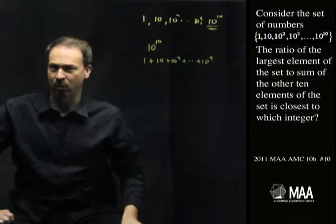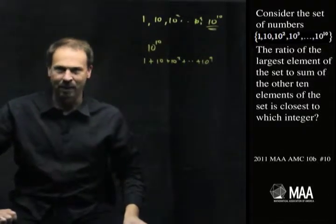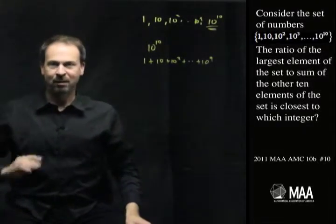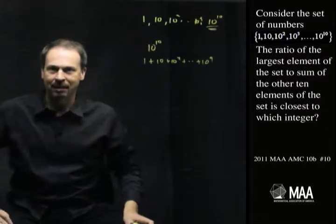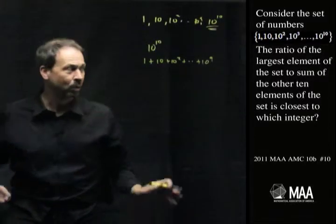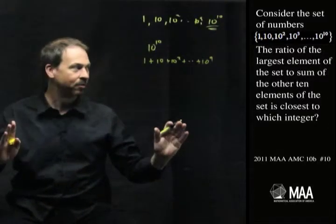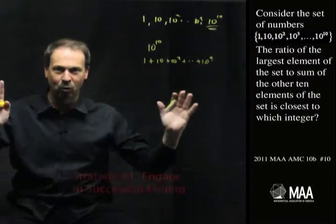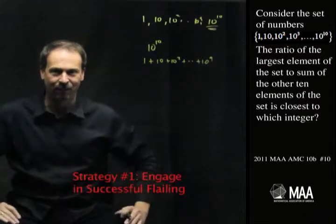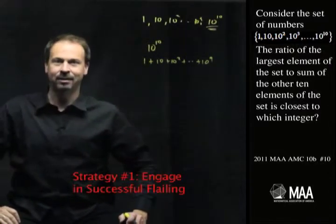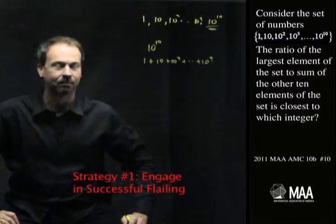So I seem to be doing some approximation here. It says, what integer am I closest to? Which means I have to make some guesses and estimations. So what I'm going to do here is strategy number one — just flail, just do stuff and try to get some feel for what's going on. I'll engage in successful flailing.